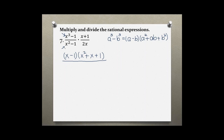Now factoring the bottom: x squared minus 1. Because there are two terms with a minus sign and this is a perfect square, this is the difference of two perfect squares. So we write two sets of parentheses, square root of x squared is x and x, square root of 1 is 1 and 1, and we need a negative and a positive sign.